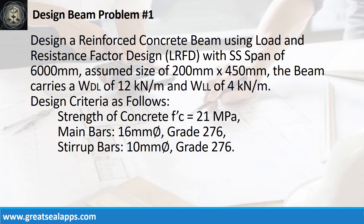Design a reinforced concrete beam using Load and Resistance Factor Design with a simply supported span of 6000 mm. Assume a size of 200 mm by 450 mm. The beam carries a uniform dead load of 12 kN per meter and uniform live load of 4 kN per meter. Design criteria: strength of concrete 21 MPa, main bars 16 mm bar, grade 276.